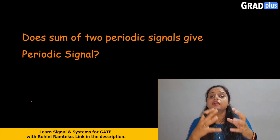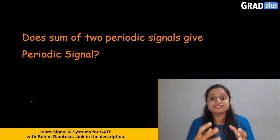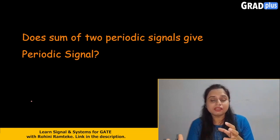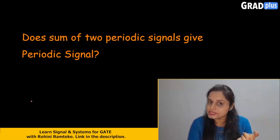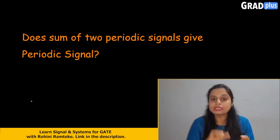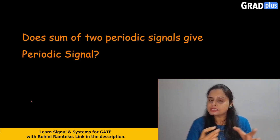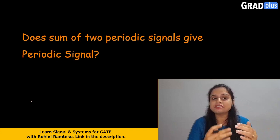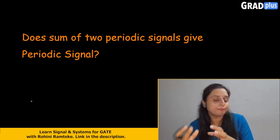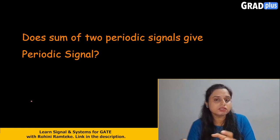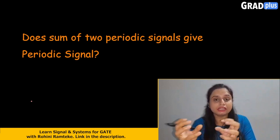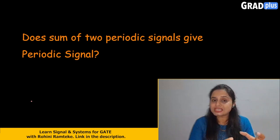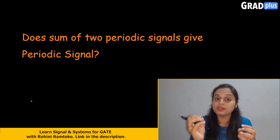Some signals follow a particular pattern. Those signals are nothing but the sinusoidal signal, the cosine signal, the triangular signal, and the square signal. These are signals which have some pattern, and they will be repeated continuously after every particular interval of time. Such signals come under your periodic signals.